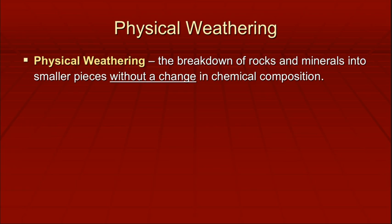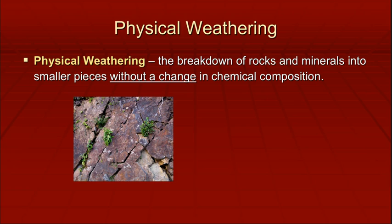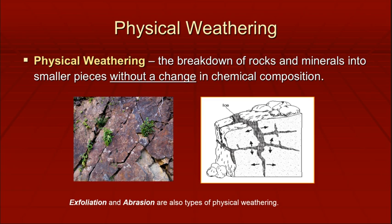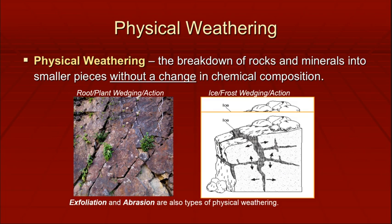There are a couple of different kinds of weathering. Physical weathering is the breakdown of rocks and minerals with no change in chemical composition. That can be plants growing into fractures and separating rock apart, or ice doing the same thing — as water seeps in and freezes it expands. The three types are wedging, exfoliation, and abrasion. Exfoliation and abrasion occur when water that has particulates in it flows over rock and acts like sandpaper.